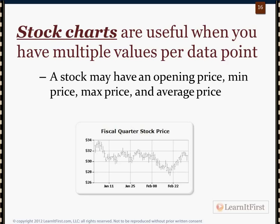Stock charts — this is for when you have four data points that you want to plot that are all related. So we have a stock and we want to track its price over time. We have four data points: the opening price, the minimum price for the day, the max price for that day, and then the average price for that day. We want to track those over a series along our category axis.